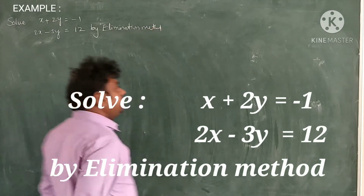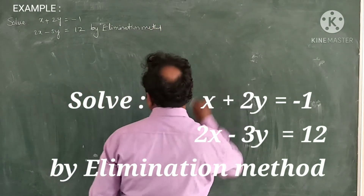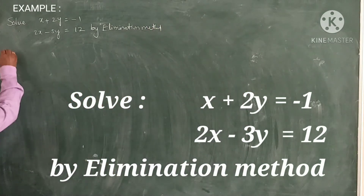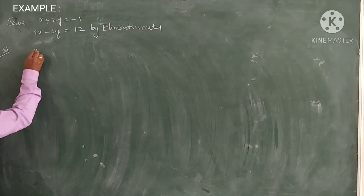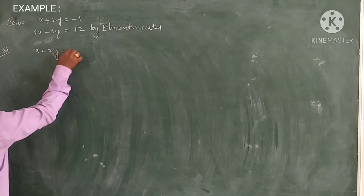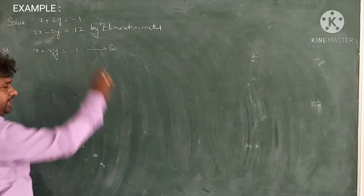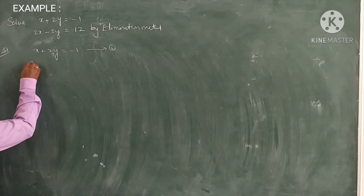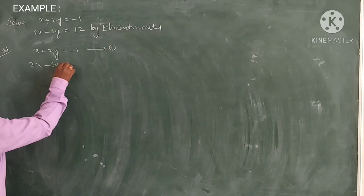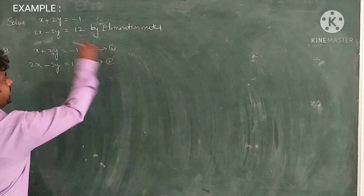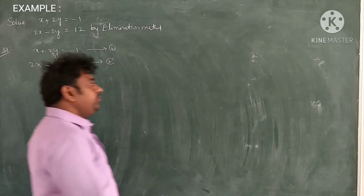Students, first observe. Write the two equations. x plus 2y is equal to minus 1 — take this as equation 1. 2x minus 3y is equal to 12 — take this as equation 2.